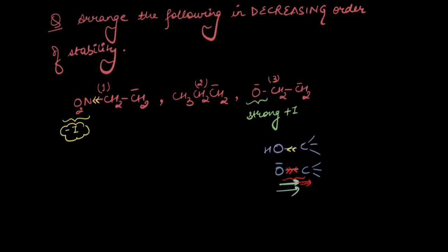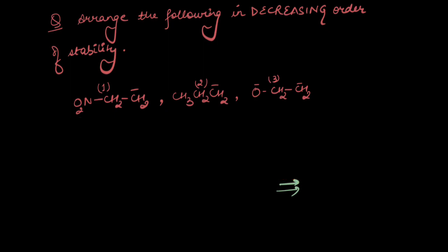Interesting how the OH group has a minus-I effect, but as soon as you put a negative charge on that oxygen atom, it gets all the electron density on itself and now wants to push that electron density away through sigma bonds, becoming a plus-I group. So the NO2 group has minus-I effect, CH3 has plus-I effect, and O- has a strong plus-I effect. Since carbanions do not want electron-donating groups near them, the most stable carbanion would be the first one and the least stable would be the third one.